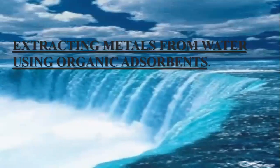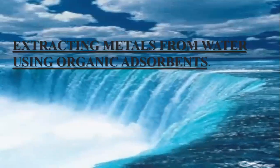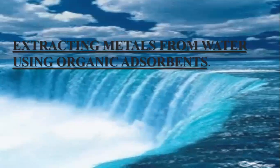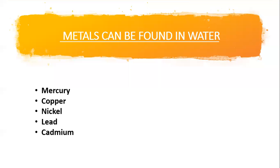Whilst in circulation, water can be contaminated by several substances. One of these substances are metals. These metals include arsenic, cadmium, chromium, copper, nickel, lead, and mercury.